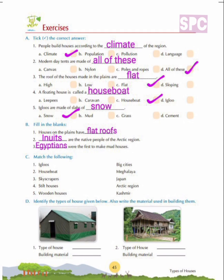Question C: Match the following. Different types of houses are given on the left and the places where they are found on the right. Igloos are found in the arctic region. Houseboats are found in Kashmir. Skyscrapers are generally found in big cities. Stilt houses are generally found in Meghalaya, because this state receives plentiful rainfall leading to chances of flood, so houses are built on stilts above ground level. Wooden houses are found in Japan, because wood is available in abundance and Japan is earthquake-prone — wooden houses are easier and more cost-effective to rebuild.